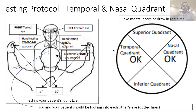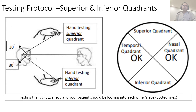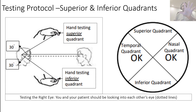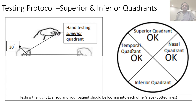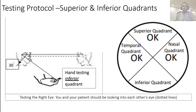Now move on to the vertical quadrants — superior and inferior. Your appropriate eyes are closed, you are at the eye level of the patient, and the patient looks into your eye. Extend your arms 30 degrees from the midline, superiorly or inferiorly, midway between yourself and the patient about a meter away. Show one, two, or five fingers and do it twice. Test superior first; if the patient counts all fingers correctly both times, write 'okay.' Then test the inferior quadrant — 30 degrees from the midline inferiorly. You don't have to count one to five or five to one in any specific order, just make sure you know how many fingers you are holding up.